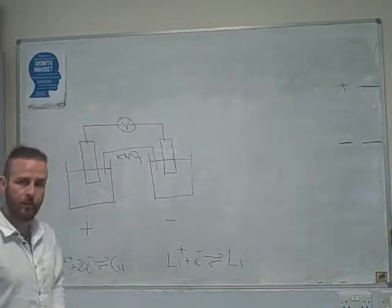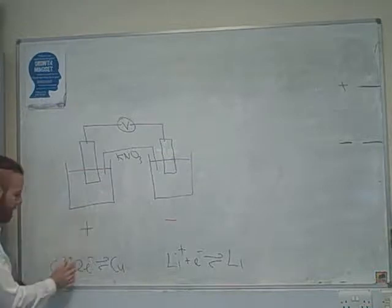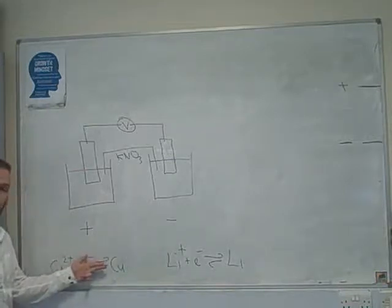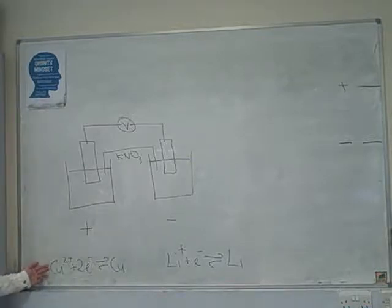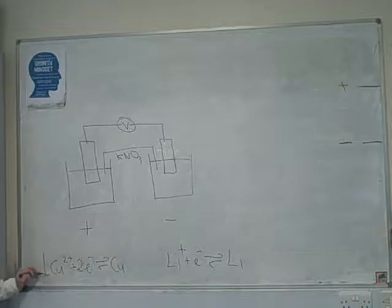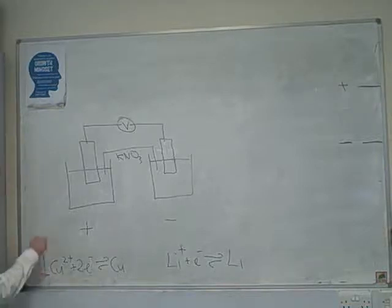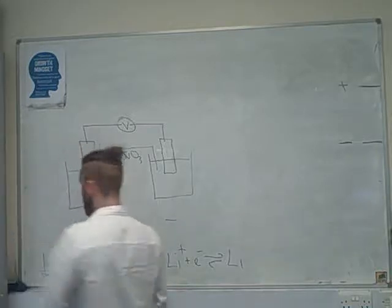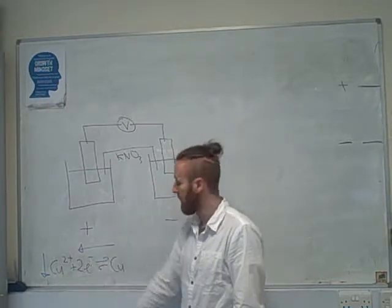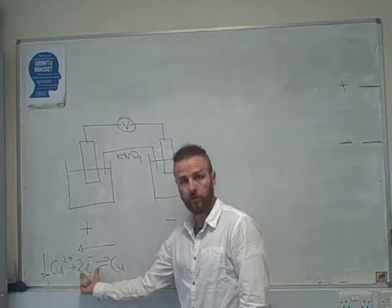I'm going to focus on this side for now. If we have the forward reaction happening, what is going to happen to the concentration of my Cu²⁺ ions as time goes on? Well, because the forward reaction is happening due to the more positive electrode potential, the concentration of my Cu²⁺ ions will decrease. Thinking about Le Chatelier's principle, if we've reduced the concentration of copper ions, the position of equilibrium will shift to the left to try and bring that concentration back up.